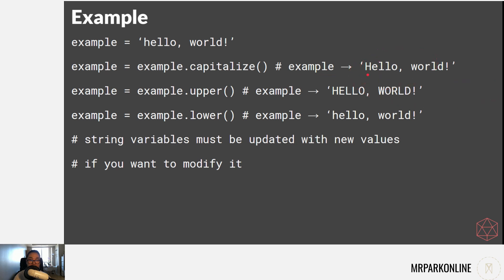If I have example as 'hello world' and capitalize it, it gives us 'Hello world' with a capital H. If I do example.upper(), we get 'HELLO WORLD'. Lastly, if I do example.lower(), example is now 'hello world'. Notice I started with the variable example and it's continuously being updated with each method because I want to keep those changes - we're modifying example.